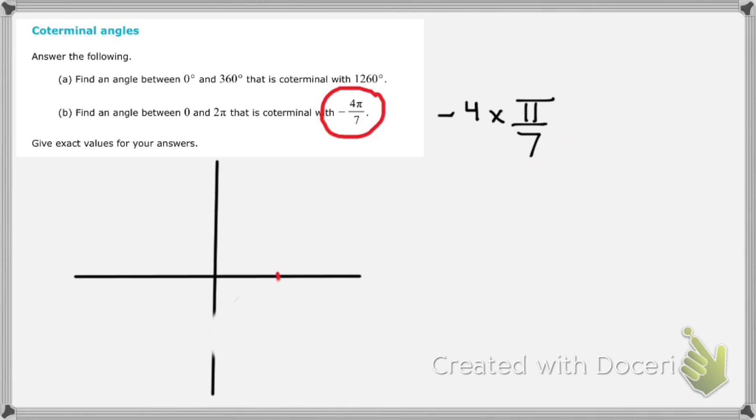We know that π is half of a circle. So π over 7 is half of a circle divided into 7ths. So if I take a half of a circle and divide it into 7ths, that's going to look something like this.